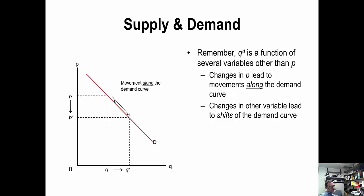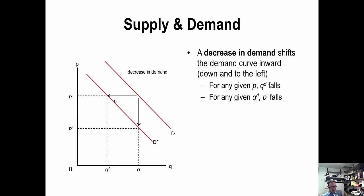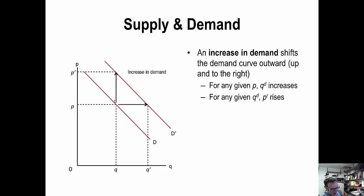A movement of the curve — a change in demand — is depicted by actual shifts of the curve. It can move up and to the right, which is an increase in demand, or down and to the left, a decrease in demand. An increase in demand means that for a given price P, quantity demanded increases from Q to Q prime; or for the Qth unit, the maximum willingness to pay rises from P to P prime. That's an increase in demand — a rightward upward shift.